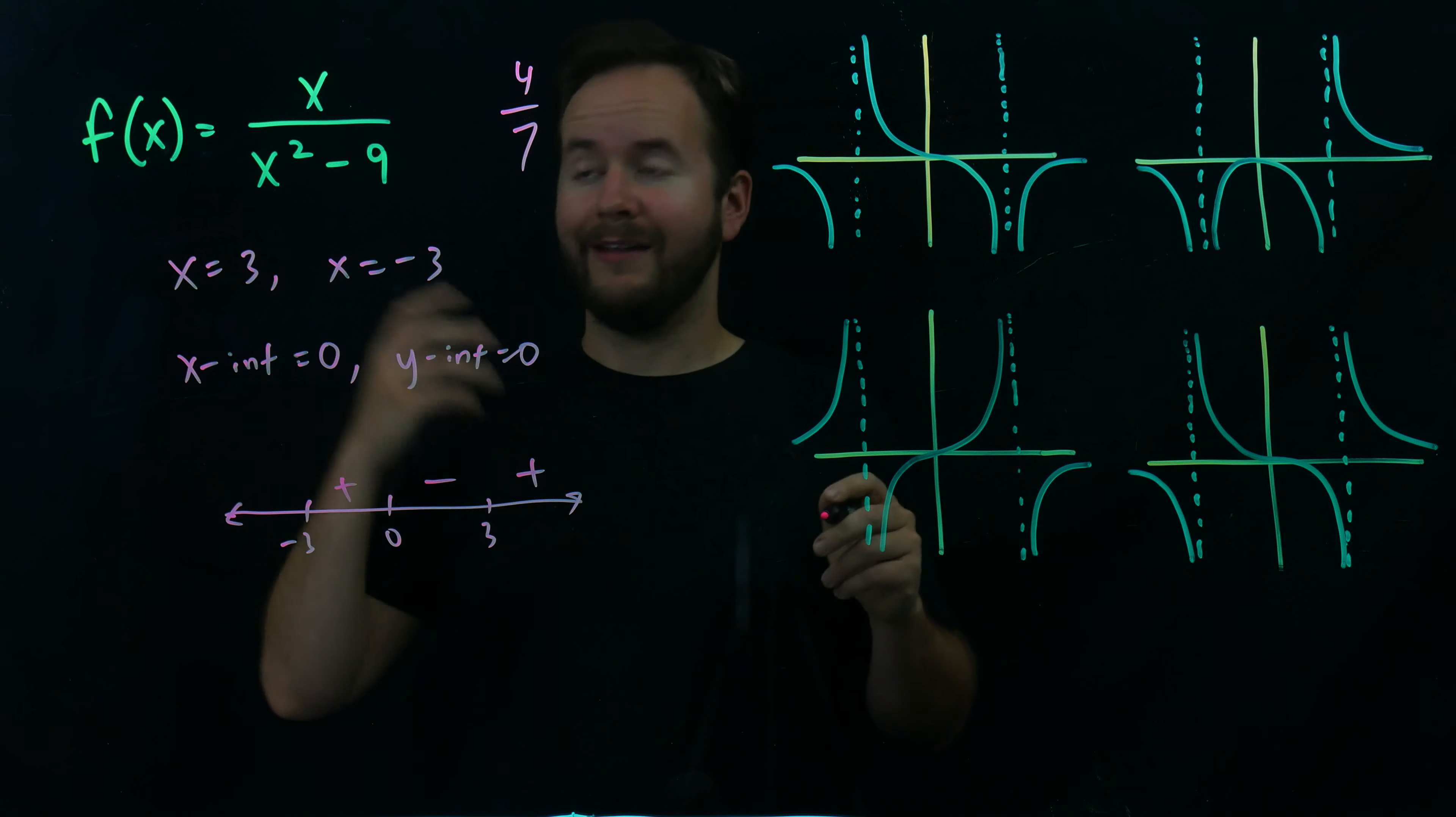Now we want the next interval. From negative 3 to 0, we want the graph to be positive. This graph is positive on the interval from negative 3 to 0. This graph is negative on the interval from negative 3 to 0, so we don't want him.